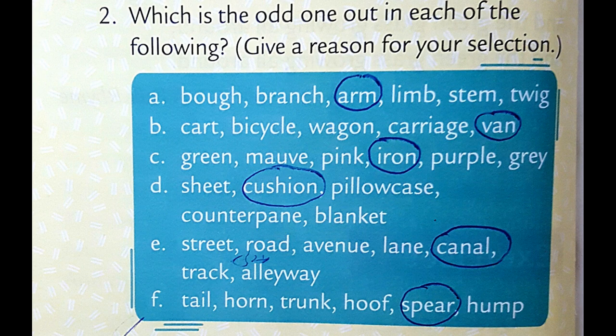You can also say a canal is a waterway; the rest are on land. F: Spear - because it is a weapon and not a part of an animal.